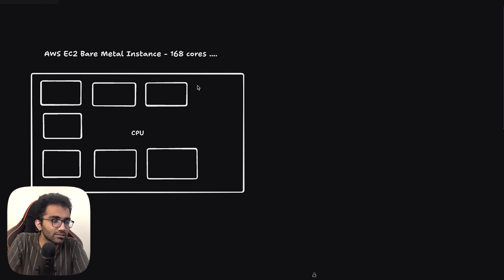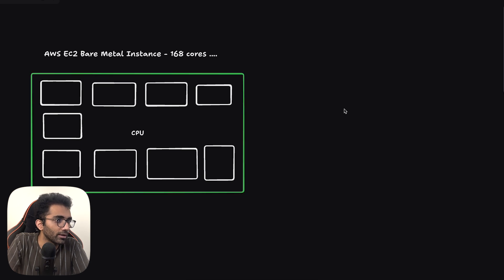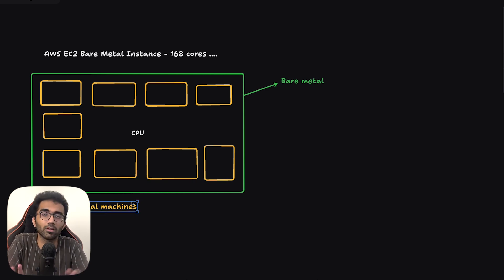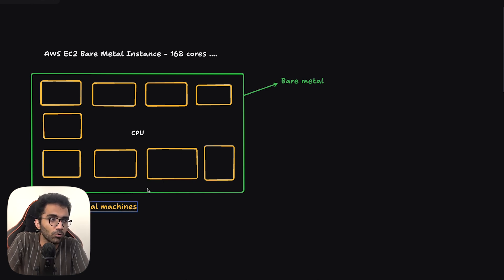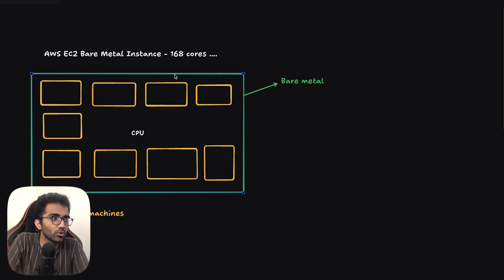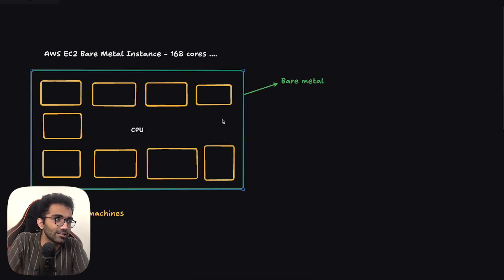These are the instances which you get. The outer one is a bare metal, and all of these instances are sort of virtual machines on top of the real bare metal machine. That's why the name 'virtual machine.' So the question is: how do you even run something like this on a bare metal? What does it even mean? This basically means that this computer is running something known as a hypervisor.